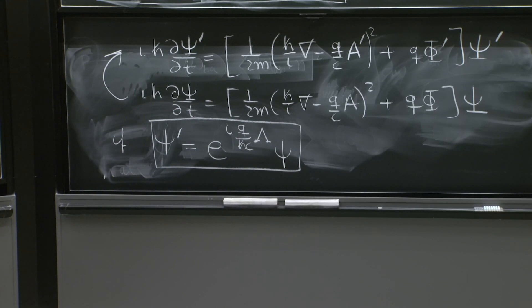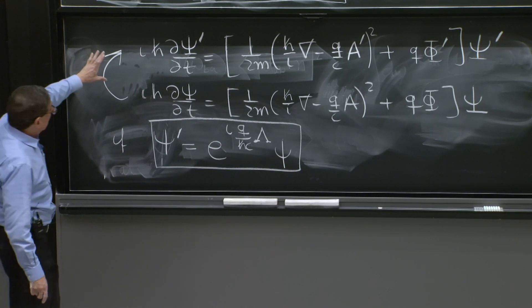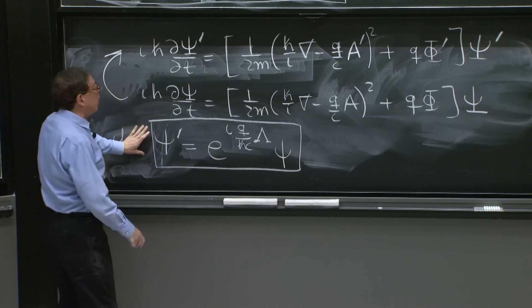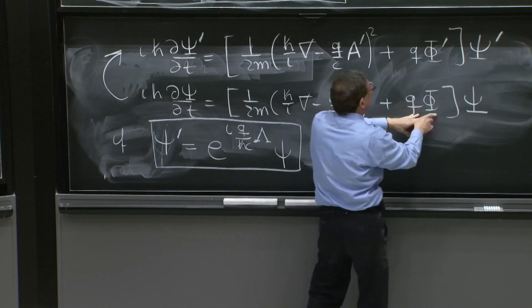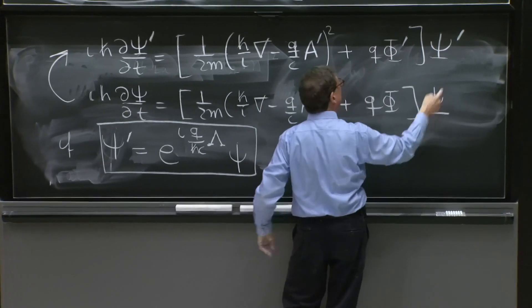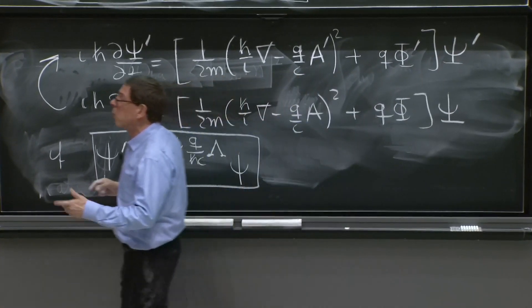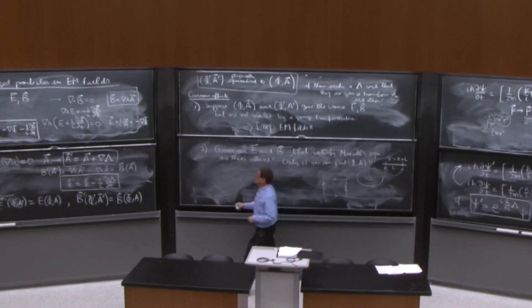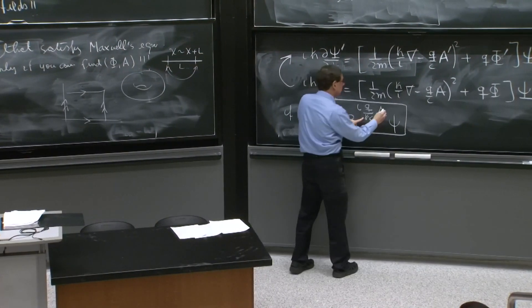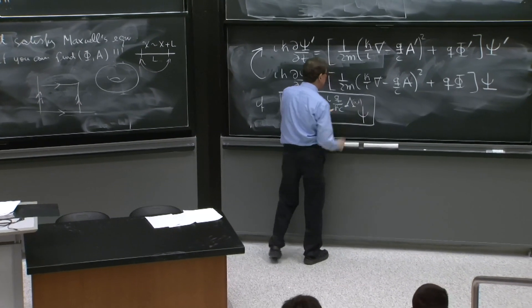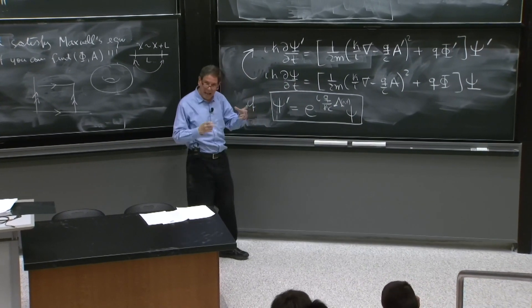So that's the key to it. When you transform the potentials, when you change A to A', and φ to φ', you should change ψ to ψ'. With what? Using the same λ that you needed to change the potentials, you do a phase rotation. And it's not a constant phase. This depends on x and t. So it's a substantial change.